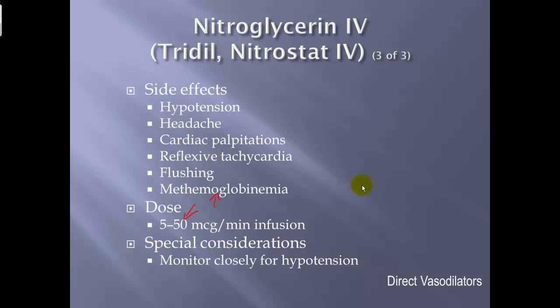To figure the drip rate for nitroglycerin in micrograms per minute: dose × drip factor ÷ concentration strength. Monitor closely for hypotension.